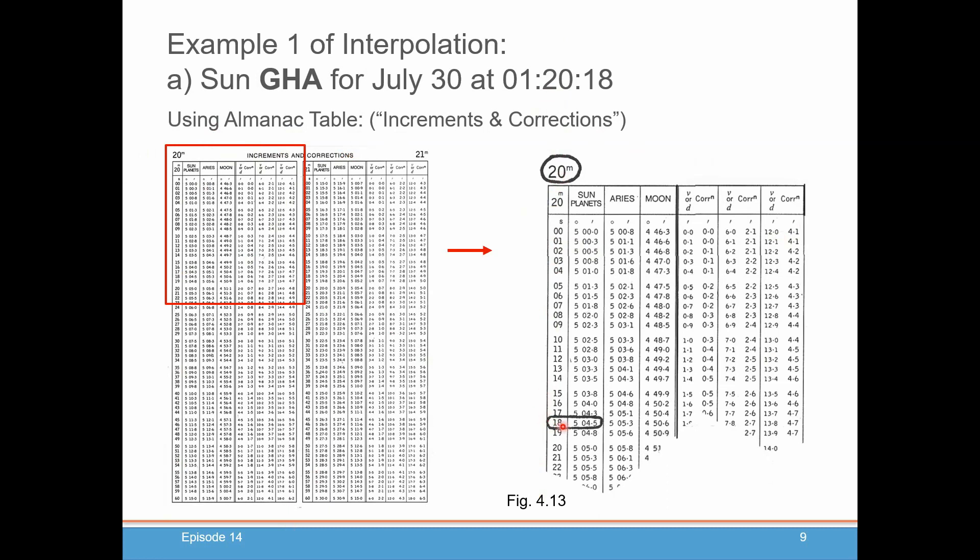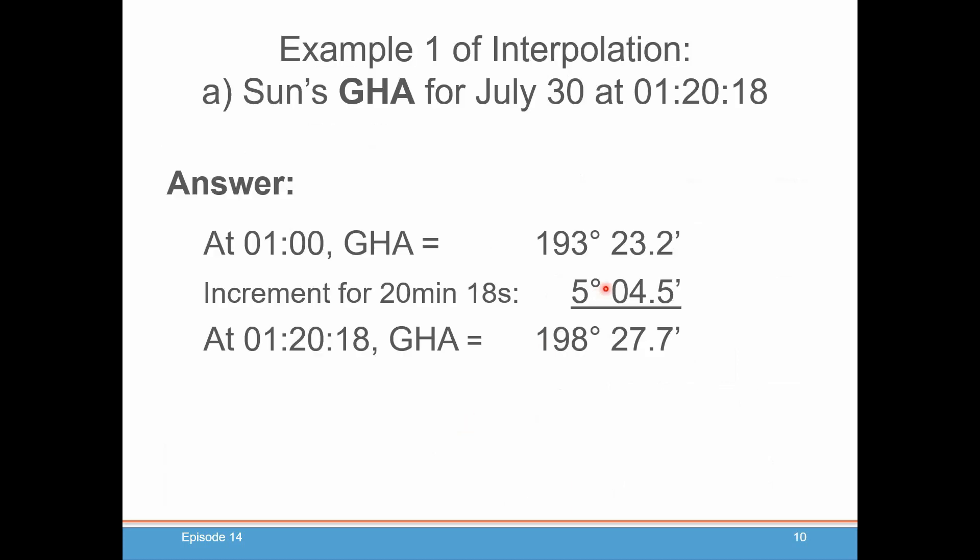So, 20 minutes, 18 seconds. The sun will have moved in the sun column 5 degrees, 4.5 minutes. We're just going to add that to our GHA at 0 100 hours to get our GHA at 0 100 hours, 20 minutes and 18 seconds. Add those two together and you get 198 degrees and 27.7 minutes. Pretty simple. The almanac did all of our interpolations for us.